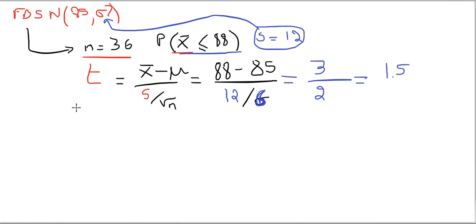So 88 minus 85 that's 3, and you have 12 divided by 6 that's 2, so the answer is t 1.5. Meaning that we are calculating the probability of t, and you have to remember what's the degrees of freedom. Remember, the degrees of freedom of t is n minus 1. So you had 36 observations minus 1, that's 35, so we write 35.